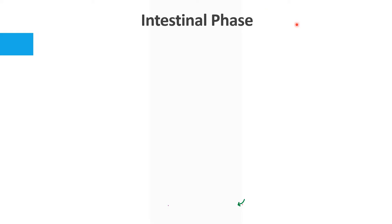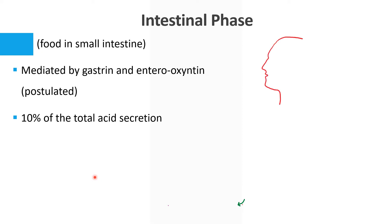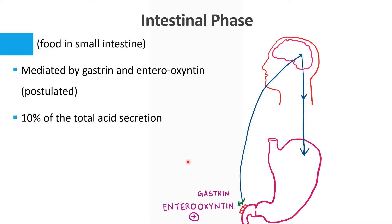The intestinal phase occurs when food is in the small intestine, but there is still a slight gastric secretion. This is mediated by gastrin as well as another hormone called enteroxyntin, and about 10% of total acid secretion occurs during the intestinal phase. It is initiated by distension of the duodenum when chyme reaches it, causing slight vagus nerve activity which increases acid secretion.